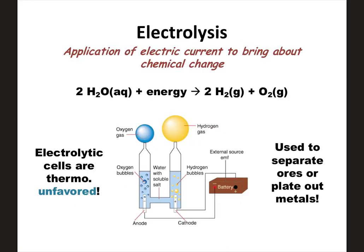Now switching to electrolysis. Electrolysis is when you apply an electric current to make a chemical change happen. When you have a thermodynamically unfavored cell, you apply an electric current to cause the reaction to take place. Thermo-favored cells generate electric current, but thermo-unfavored electrolytic cells need an electric current to go.